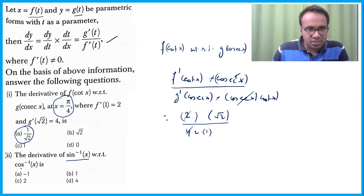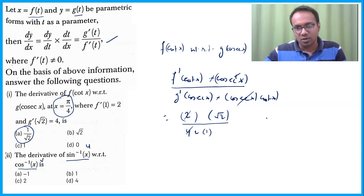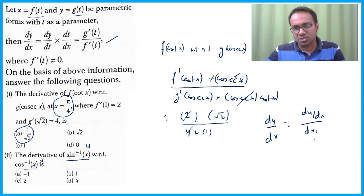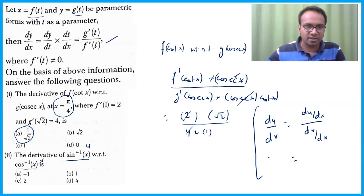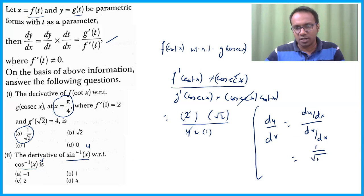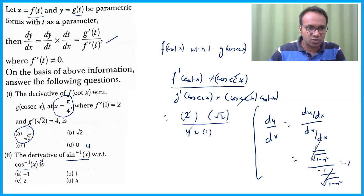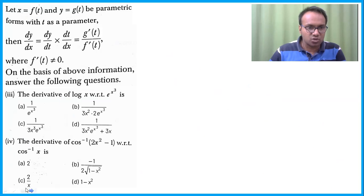Differentiate sin⁻¹x with respect to cos⁻¹x. Let u = sin⁻¹x, v = cos⁻¹x. Find du/dv = (du/dx) / (dv/dx). du/dx = 1/√(1−x²) and dv/dx = −1/√(1−x²). Dividing: du/dv = [1/√(1−x²)] / [−1/√(1−x²)] = −1. The answer is −1.